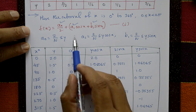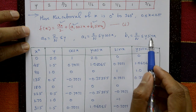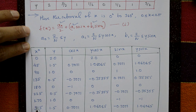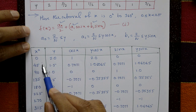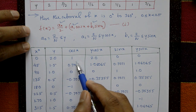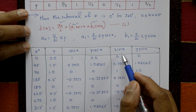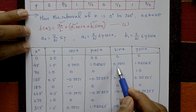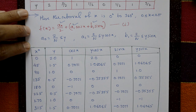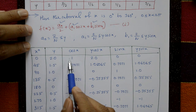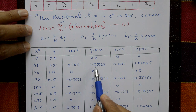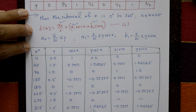The table has columns: x, y, cos x, y·cos x, sin x, y·sin x. For x = 0°: cos 0 = 1; for x = 45°: cos 45° = 0.7071; similarly for 90°, 135°, 180°, and remaining degrees. For sin x: sin 0 = 0, sin 45° = 0.7071, sin 90° = 1, and so on. For y·cos x: 2.0 × 1 = 2.0, 1.5 × 0.7071 = 1.06065, and so on for all values.